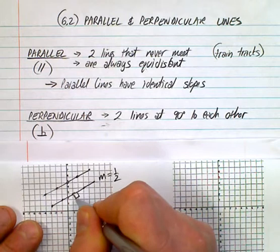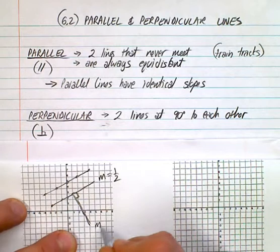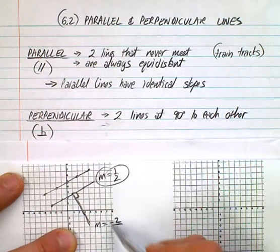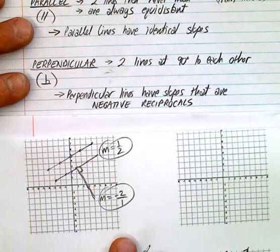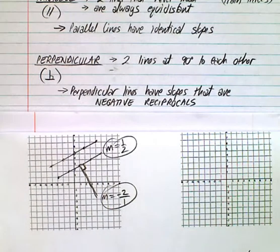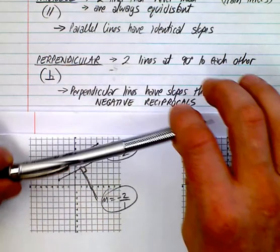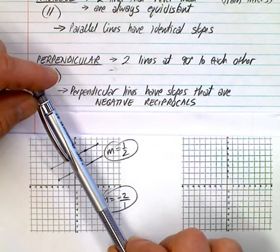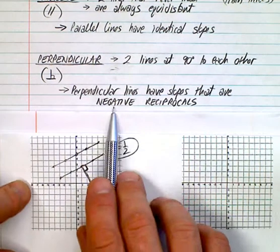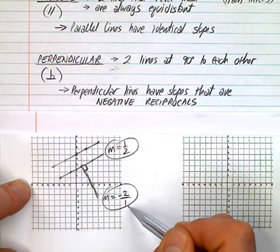The perpendicular line goes down two and over one, so its slope is negative two over one. The relationship between those two numbers — one half and negative two — is that they are called negative reciprocals of each other. Perpendicular lines have slopes that are negative reciprocals. The opposite sign means positive becomes negative or negative becomes positive, and reciprocal means you simply flip the fraction.